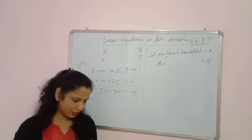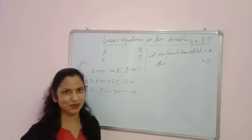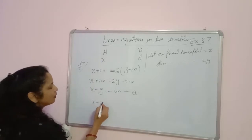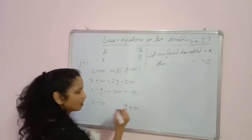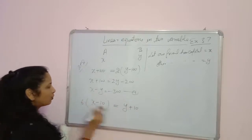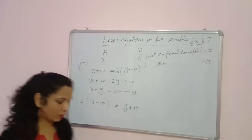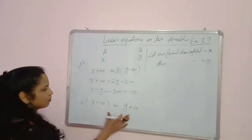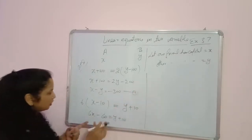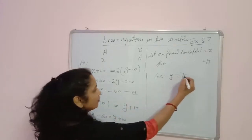For the second condition, B says: if you give me 10, I shall be 6 times as rich as you. A loses 10, so A has X minus 10, and B gains 10, so B has Y plus 10. The condition gives us Y plus 10 equals 6(X minus 10), which simplifies to: 6X minus Y equals 70. This is equation 2.